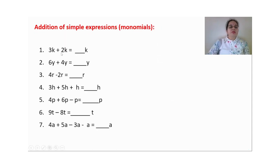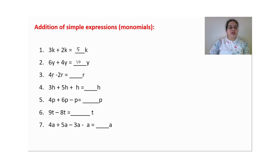Now let us take some simple examples for monomials. Here the variables are the same: 3 plus 2 gives 5k; 6 plus 4 gives 10y. The variables are again the same: 4 minus 2 gives 2. Notice — we keep the variable the same and only add or subtract the coefficients according to sign.